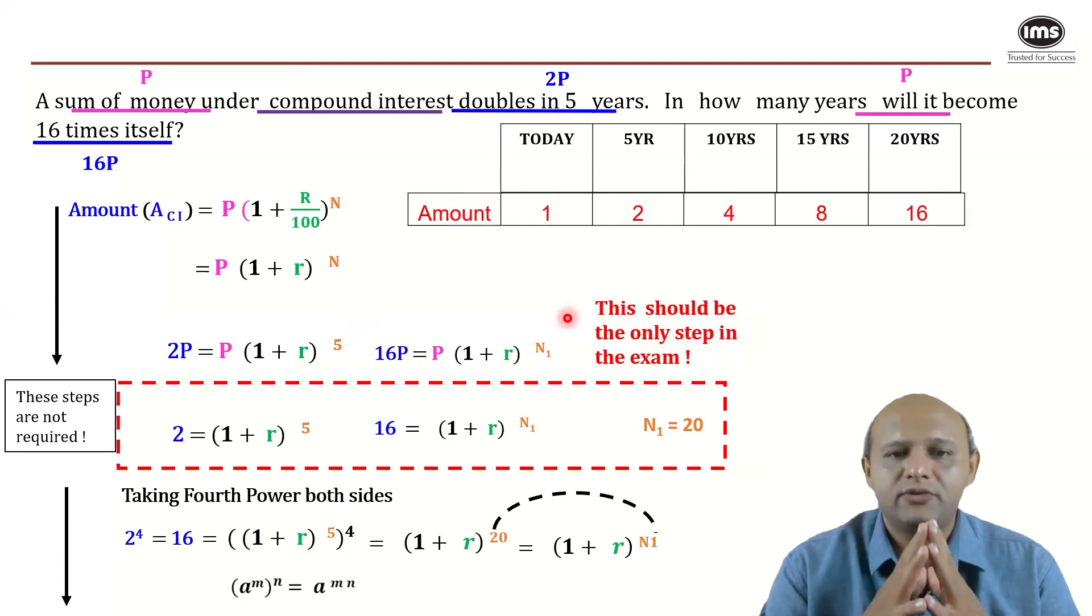What would be a better approach is to align your understanding of compound interest and the amounts under compound interest to a geometric progression. If you notice, today the principal is P. In five years it becomes double, so one becomes two. In a 10-year span it would become four times, 15 years eight times, in 20 years 16 times.